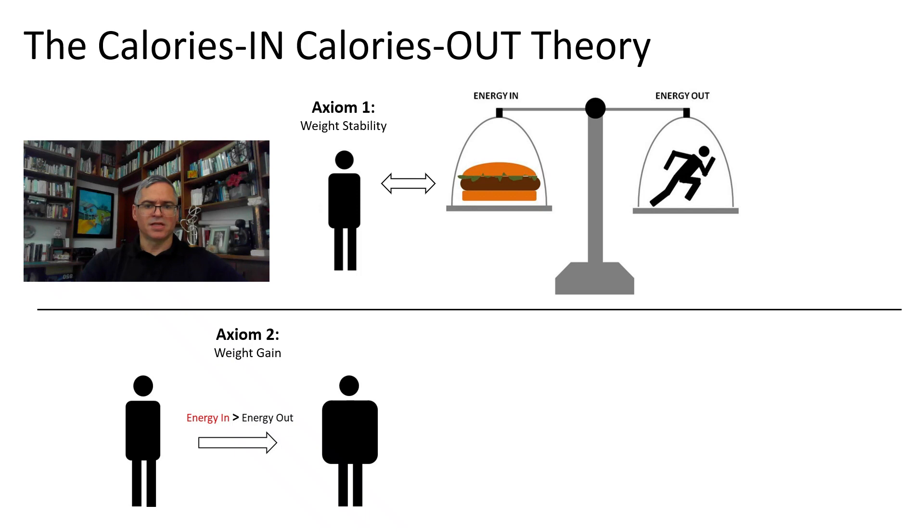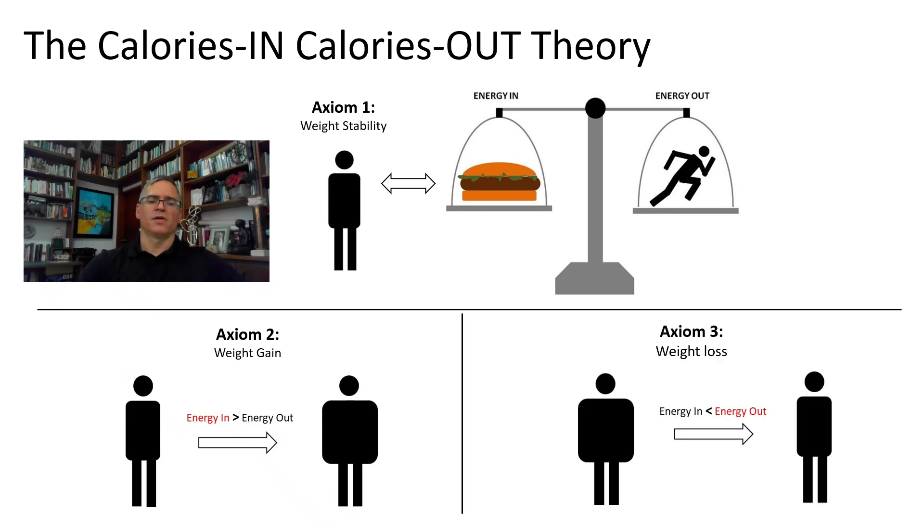The second axiom states that when the absorbed energy intake is on average greater than the expended energy, then the excess energy accumulates leading to weight gain, a state known as positive energy balance or simply a state of energy surplus. Finally, the third axiom states that when the expended energy exceeds on average the absorbed energy intake, then the body energy stores are reduced leading to weight loss, a state known as a negative energy balance or simply a state of energy deficit.